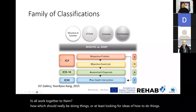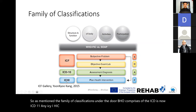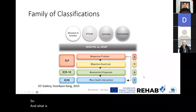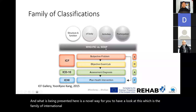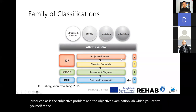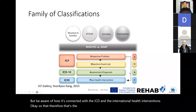The family of classifications under the WHO comprises the ICF, the ICD (now ICD-11), and the ICHI. What has been presented is a novel way to look at this — the family of international classifications versus SOAP. SOAP has the subjective problem and objective examination at the center of the ICF, while also connecting with the ICD and the International Health Interventions, representing assessment, diagnosis, and the plan of health intervention.